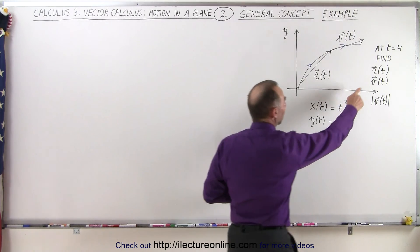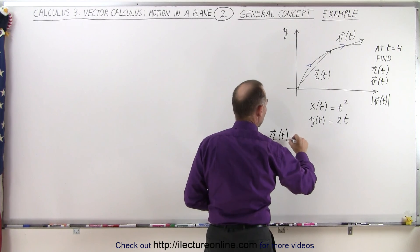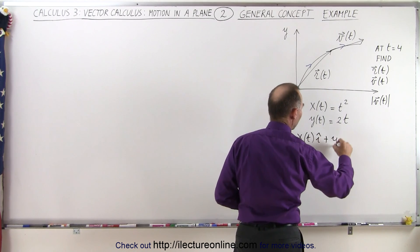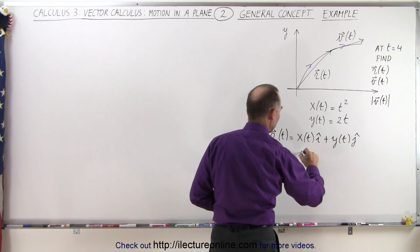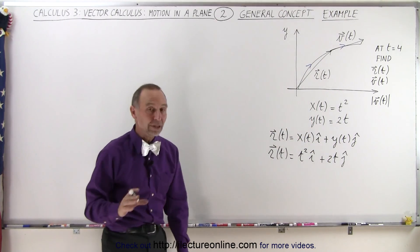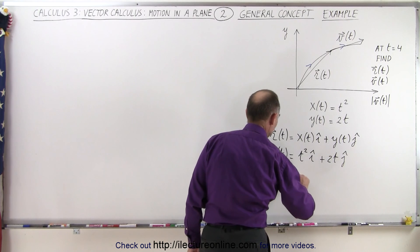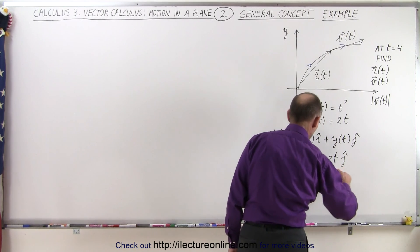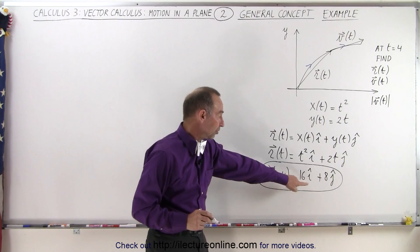We're going to first find the position vector, and then evaluate it at t equals four. The position vector is equal to the x function of t in the i direction plus the y function of t in the j direction. So the position vector is t squared in the i direction plus 2t in the j direction. Evaluating at t equals four: that gives us four squared, or 16, in the i direction, plus 2 times 4, or 8, in the j direction — so 16 in the x direction and 8 in the y direction.